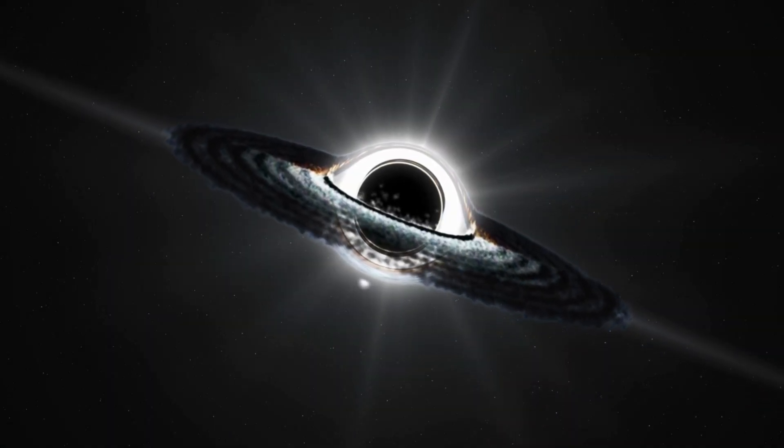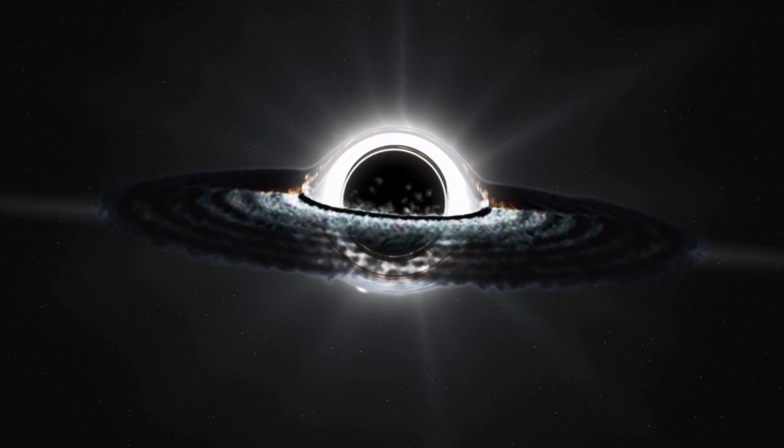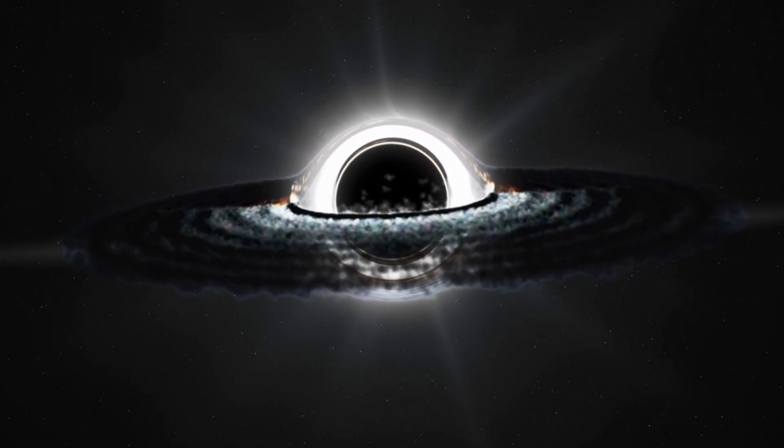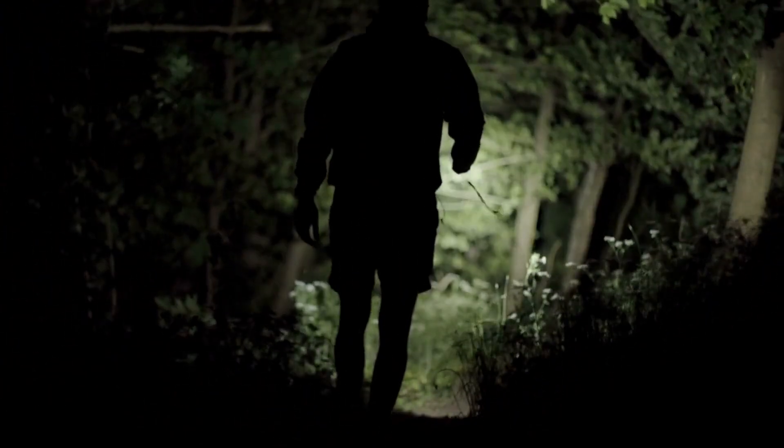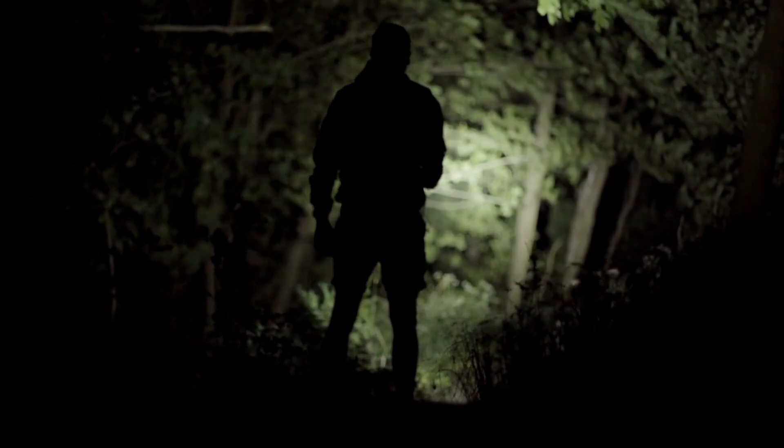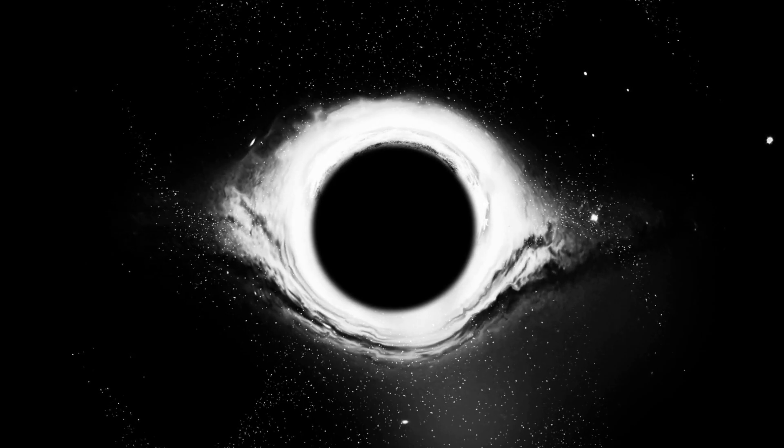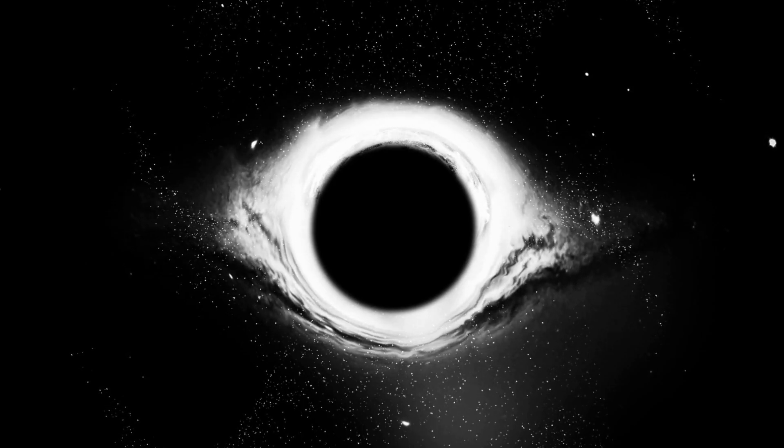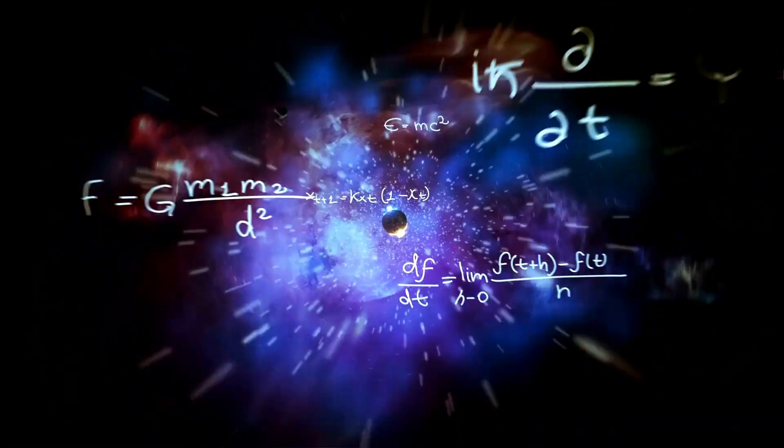The event horizon forms an invisible force field that holds everything within it, including light, which is normally considered the fastest entity in the universe. To highlight the extraordinariness of the situation, imagine that you are turning on a flashlight. The light rays that emit travel at an astonishing speed of approximately 300,000 km per second. However, if you were to somehow find yourself inside a black hole, the speed required to escape its pull would be even faster than the speed of light. This is completely impossible according to our current understanding of physics.